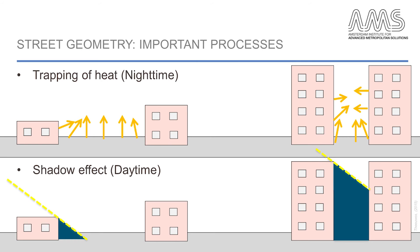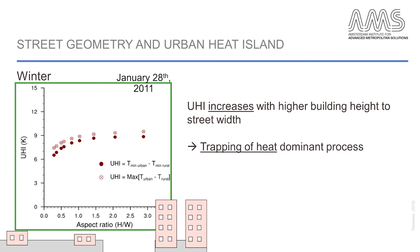Which of these processes dominates in controlling the urban heat island varies for different seasons and latitudes. For example, in the winter of the mid-latitudes — cities like New York, Paris, or Moscow — there is very little incoming solar radiation. For this reason, the trapping of heat is the dominant process, meaning the urban heat island increases for narrow streets with high buildings.